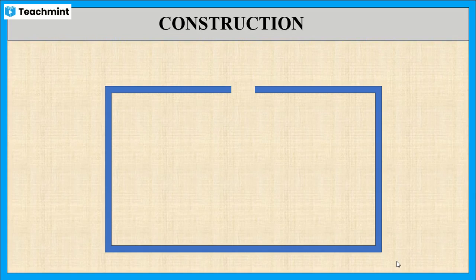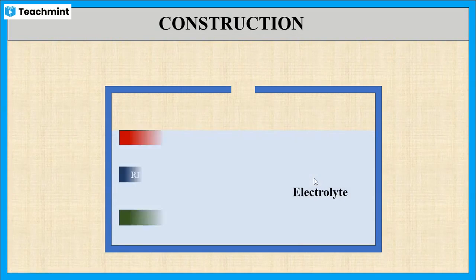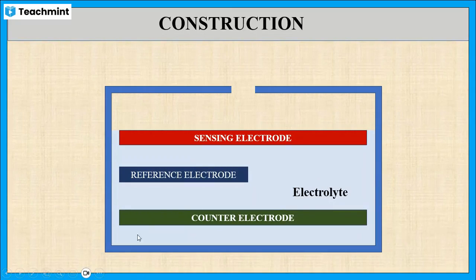Now let us see the assembly of electrochemical sensors. Generally, the electrochemical sensor contains a container filled with electrolyte, which is immersed in three electrodes: sensing electrode, reference electrode, and counter electrode.